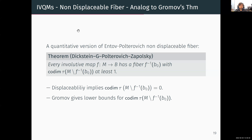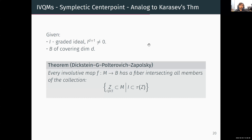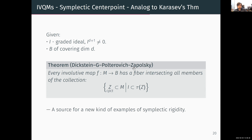What is the symplectic analog of Karasov's theorem? Consider some graded ideal i in the quantum cohomology satisfying that the (d+1)-th power is non-zero, and B is some manifold of covering dimension d. Then analogously to Karasov's theorem, every involutive map from M to B must have a fiber which intersects a huge collection of sets — all the sets in M such that i is in their measure. This is a source of new examples of symplectic rigidity.